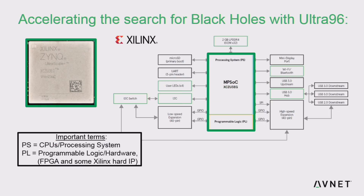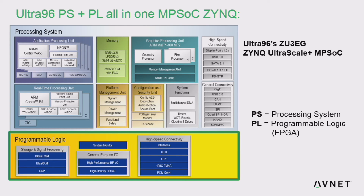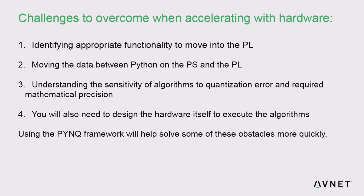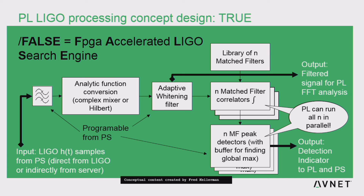Here's the Ultra96 board system — PS and programmable logic. I told you you can accelerate it here. Here's an overview of the entire chip — most people I talk to are familiar with programmable logic. I'm saying you can accelerate it, make it run a lot faster using the PL. This is my fun part: conceptually, since I said it's a radio signal processing problem, this is my conceptual view of what I would put in the FPGA to process and find the black holes.